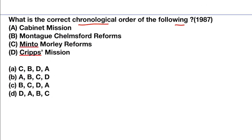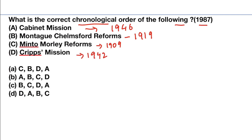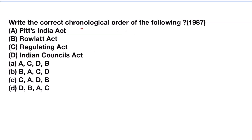What is the correct chronological order of the following? Asked in 1987 UPSC: Cabinet Mission, Montague Chelmsford Reforms, Minto Morley Reforms, Cripps Mission. Cabinet Mission came in 1946. Montague Chelmsford Reforms, or the Government of India Act, came in 1919. Minto Morley Reforms in 1909. And Cripps Mission came in 1942. So the answer will be C, B, D, A.